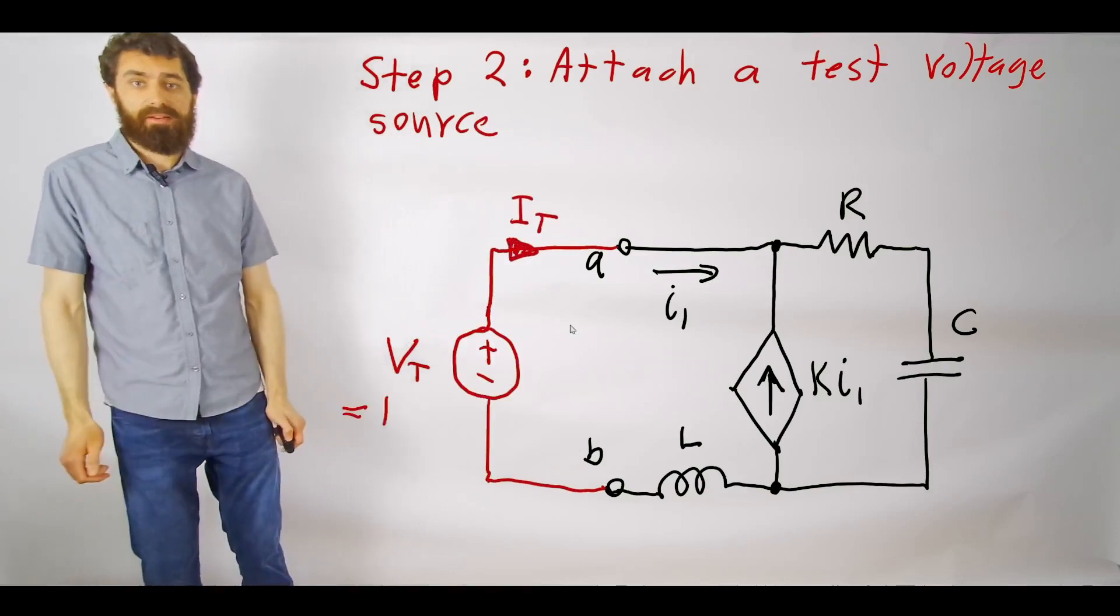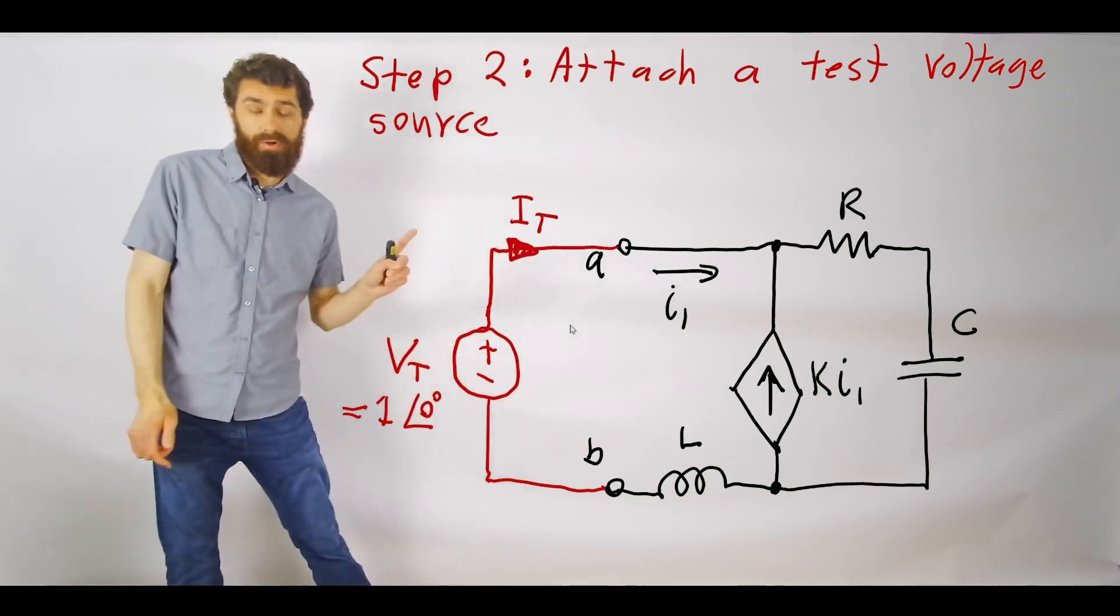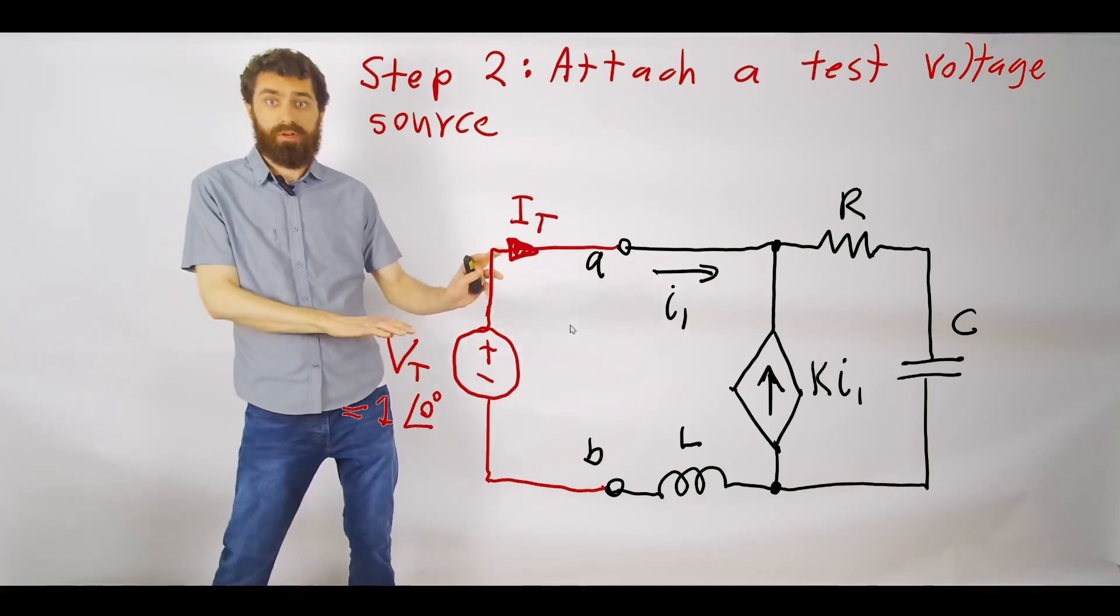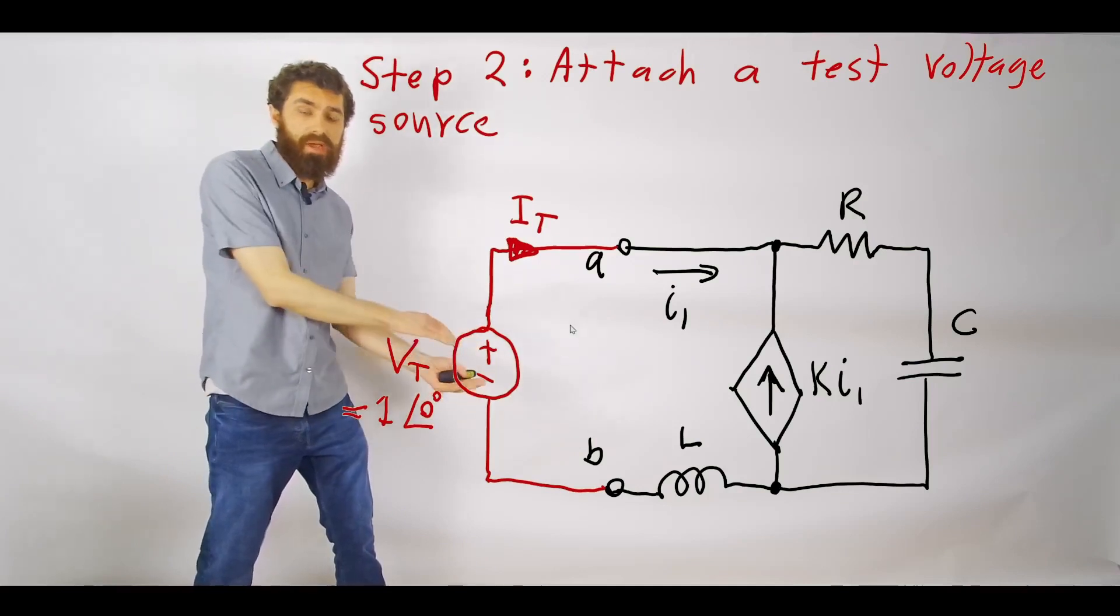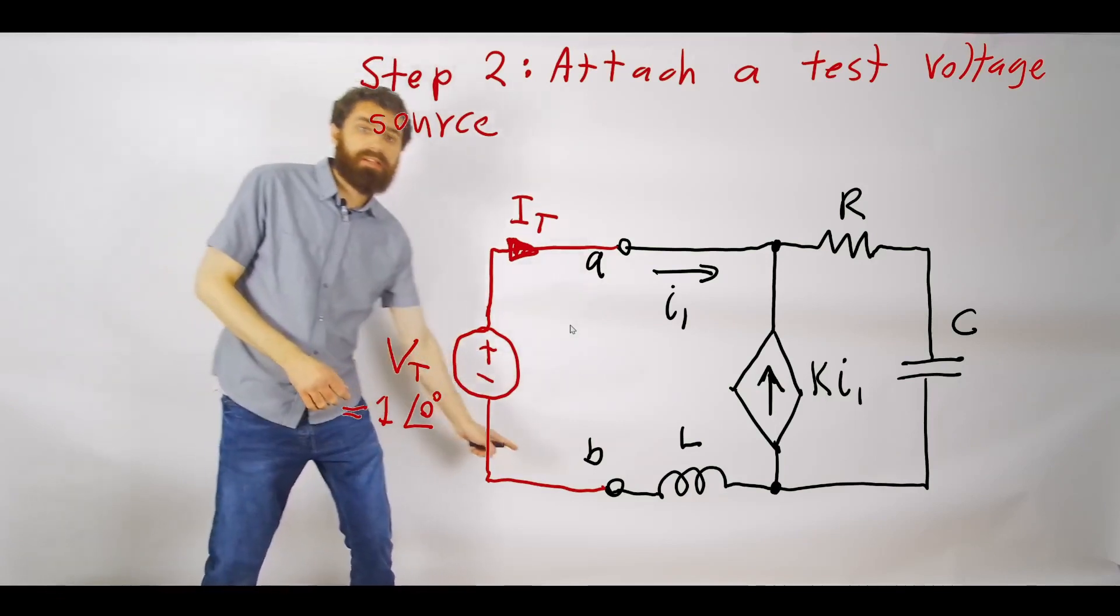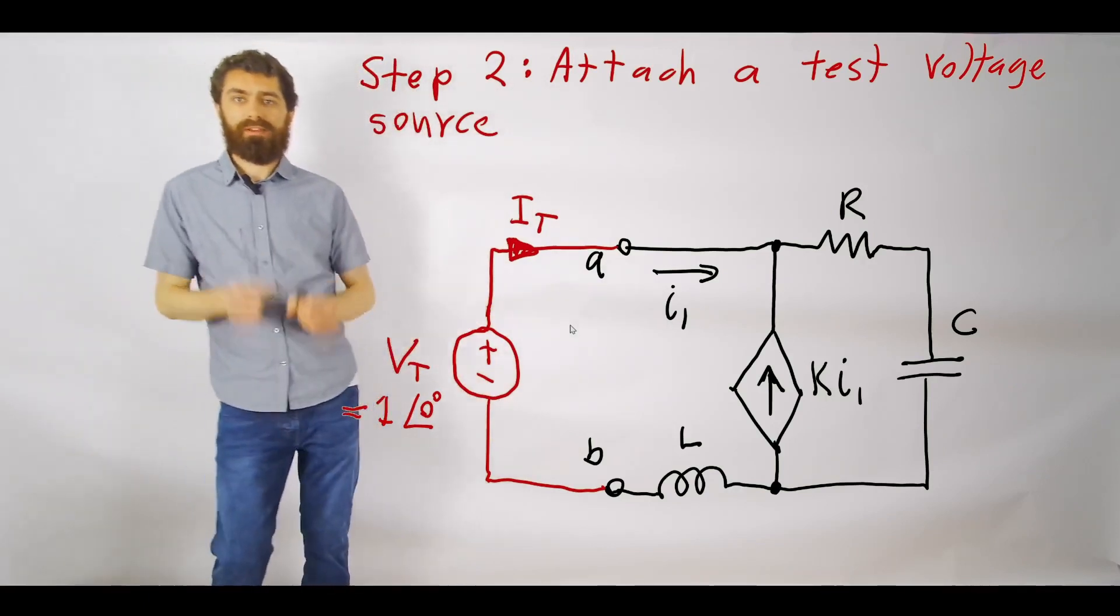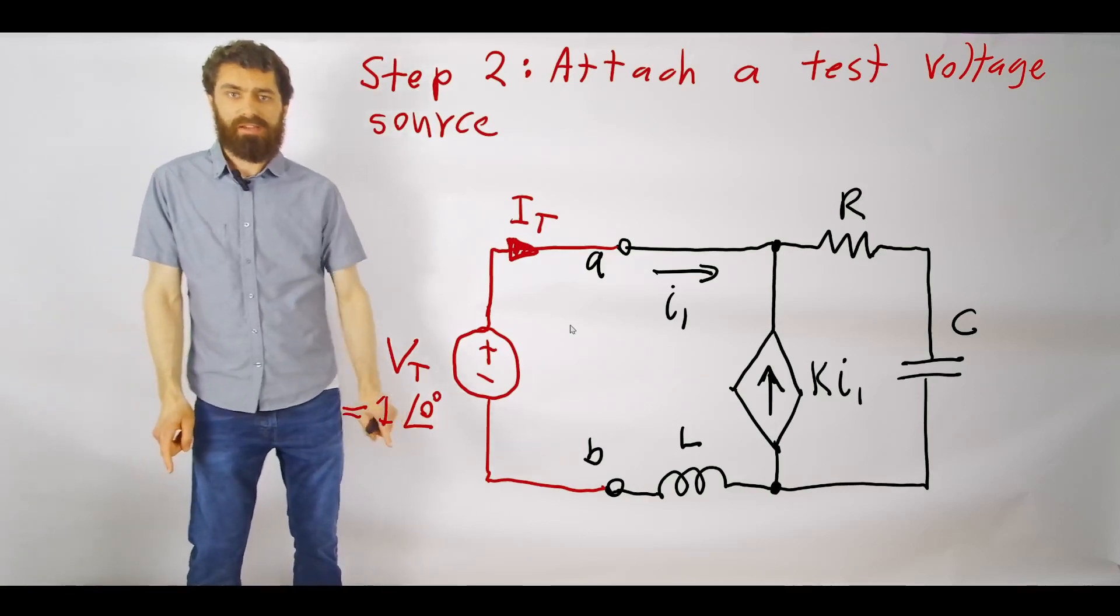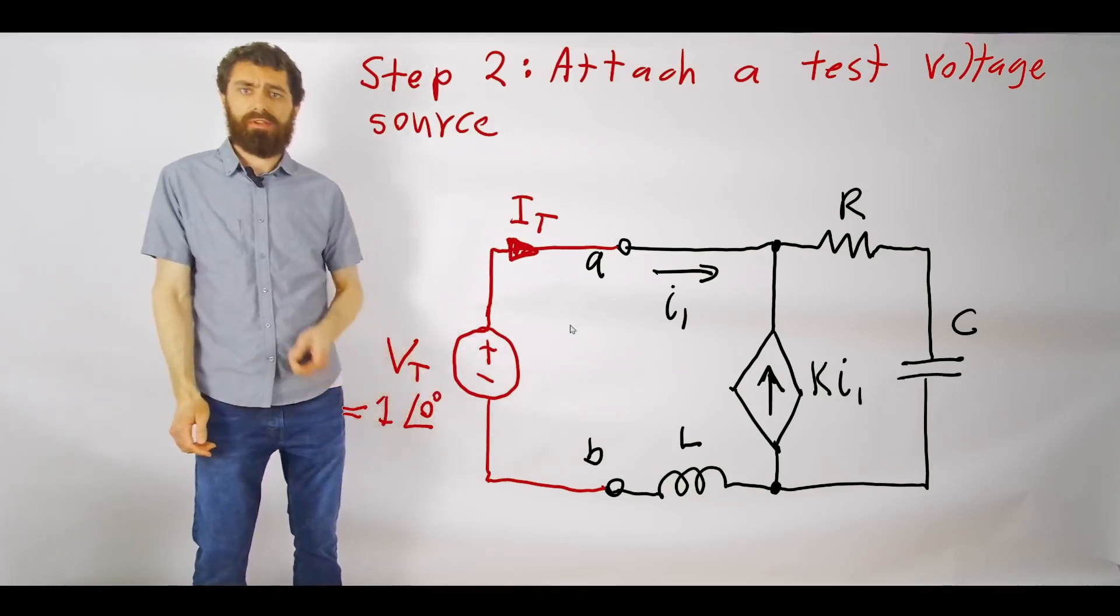We go ahead and add that, and notice that we define our IT as going out of the positive terminal. That's important—that orientation is always given with our test voltage source. I could have flipped the plus and minus signs here of this VT, but then I would have needed to define my IT as going this way instead. As long as you're consistent, the math will work out and you will be in good shape. Then to make things easier, usually I just set VT equal to one volt or something simple like that, just one angle zero degrees.